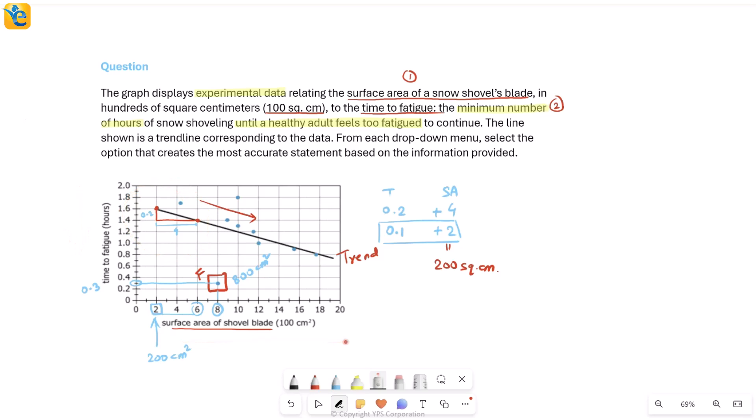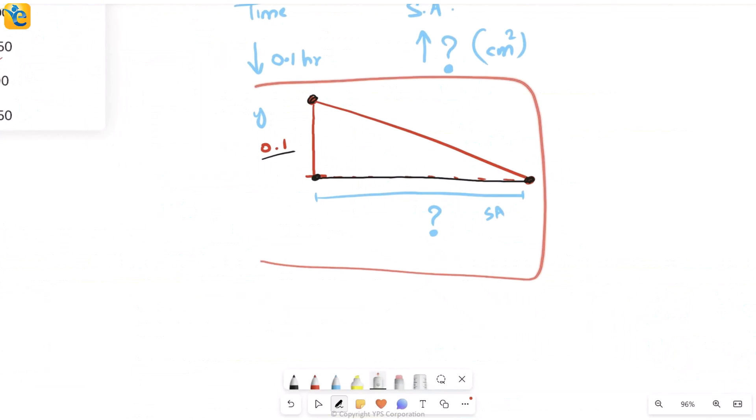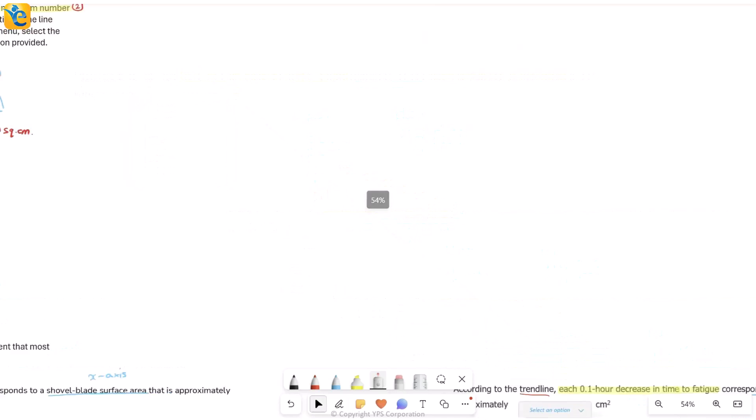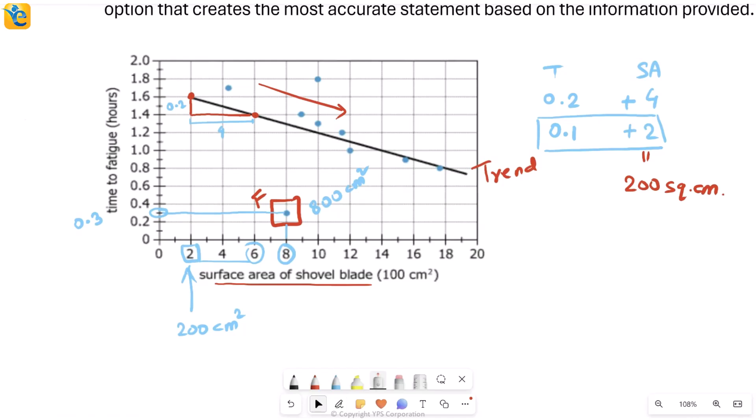Before we even went into the data, we determined our approach. We already knew what kind of information we wanted—how much the x value increased as the y value went down by 0.1. Even after we came into the data, we were smart about how to make inferences. We chose values that were easier to read to be more efficient. Once we got it for 0.2 degrees, we could easily scale it down to 0.1. So you saw three things: own the data set, understand the question and determine your approach before you come to data, and even after you do come to data, be smart about how you use it. Be efficient.